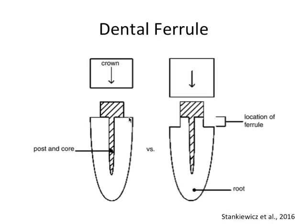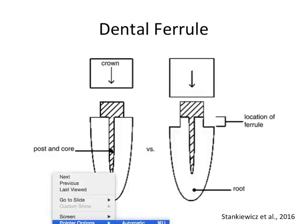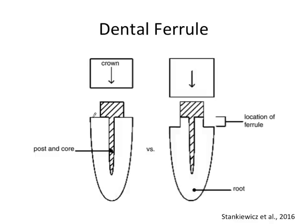The flat top tooth offers no resistance to lateral forces. If we have lateral leverage forces on the crown — the crown would be fitting on top of this core — any lateral leverage during function would transfer solely to the core material and then translate to lateral forces from the post. There's nothing stopping all those forces from translating to the core.